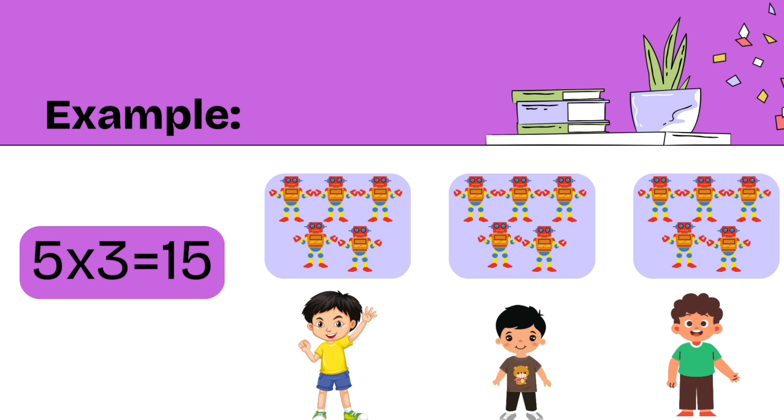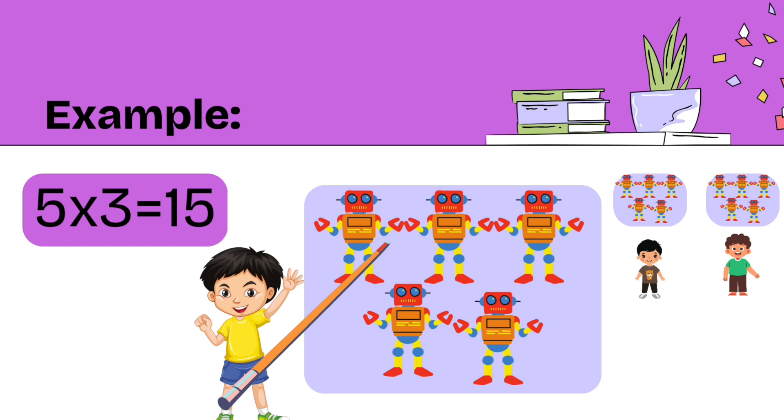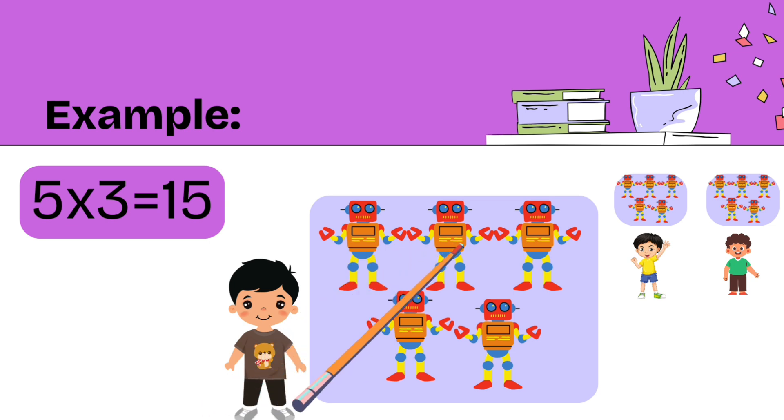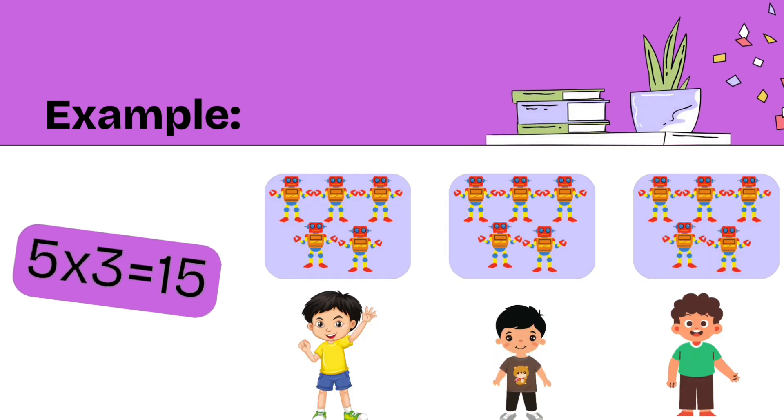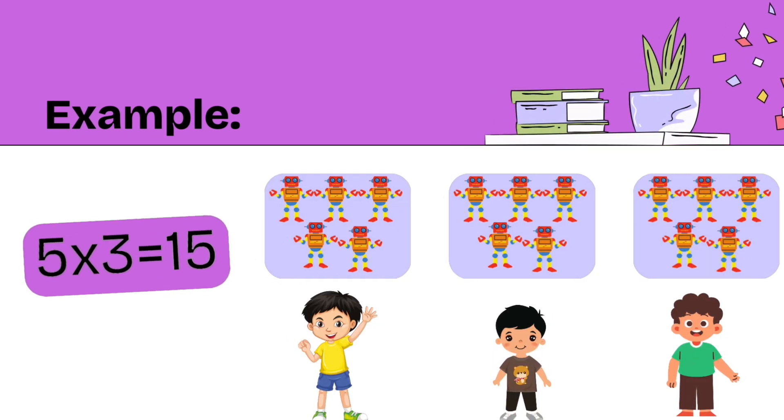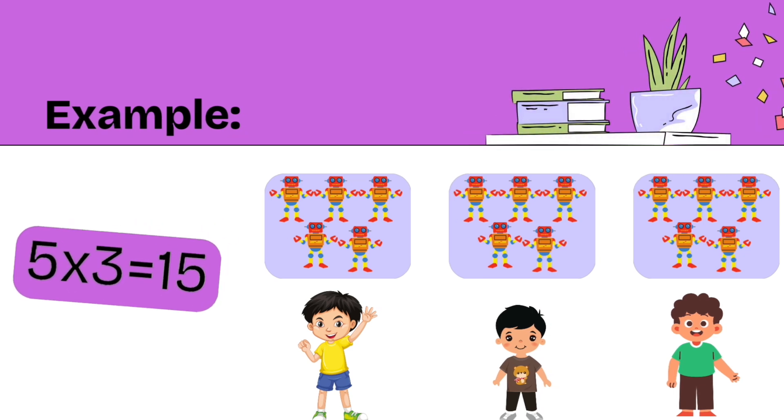This one is a bit challenging. Together with us are Kevin and Ray. Each of them has five robot toys. Do you want to know how many robot toys they would have if they combine their toys together? Let us help them count their toys: one, two, three, four, five, six, seven, eight, nine, ten, eleven, twelve, thirteen, fourteen, fifteen. That's right! If we combine their toys together, they would have fifteen robot toys. Good job, children!